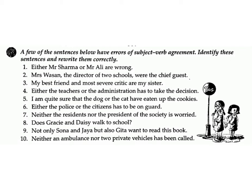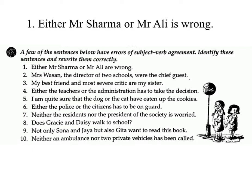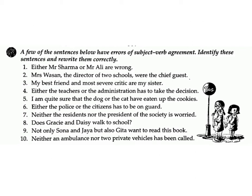Exercise B: A few of the sentences below have errors of subject-verb agreement. Identify these sentences and rewrite them correctly. 1. Either Mr. Sharma or Mr. Ali are wrong. Answer: Either Mr. Sharma or Mr. Ali is wrong.